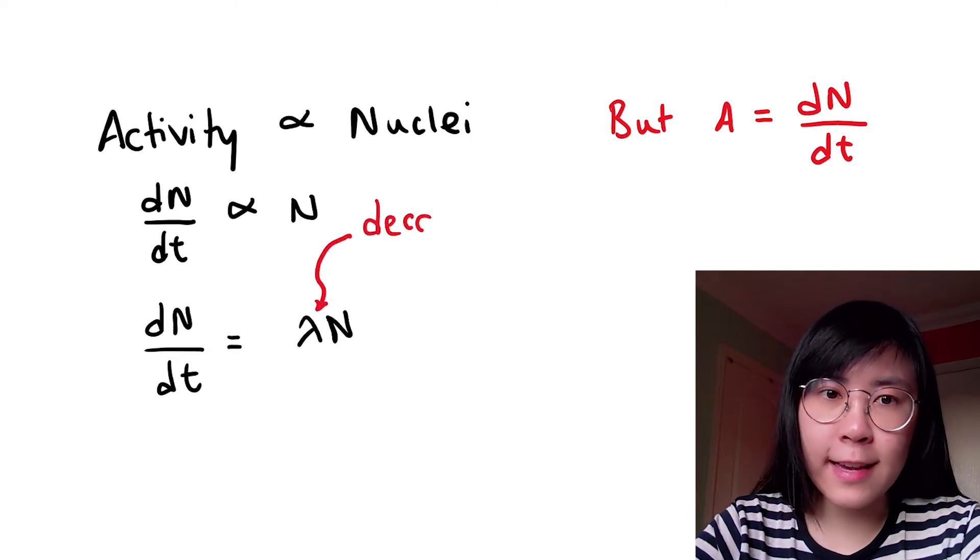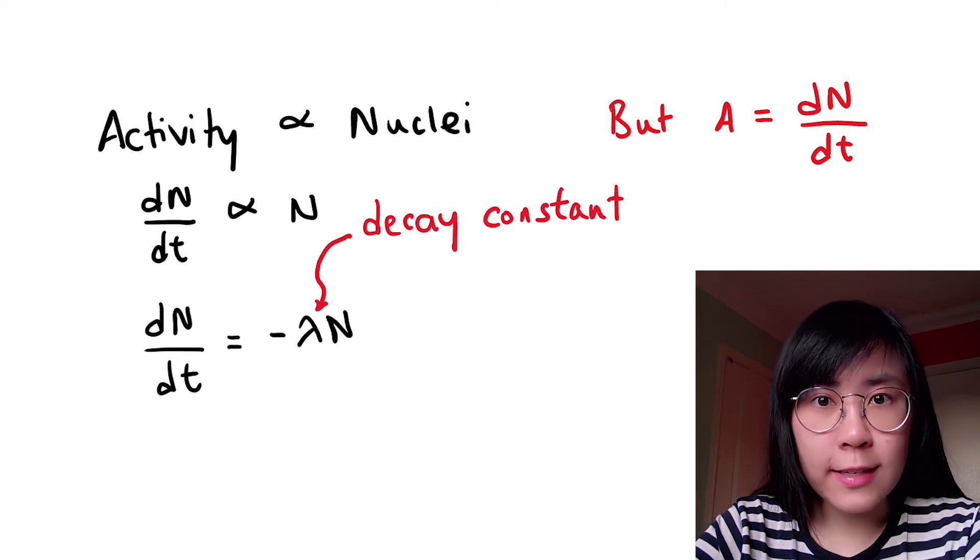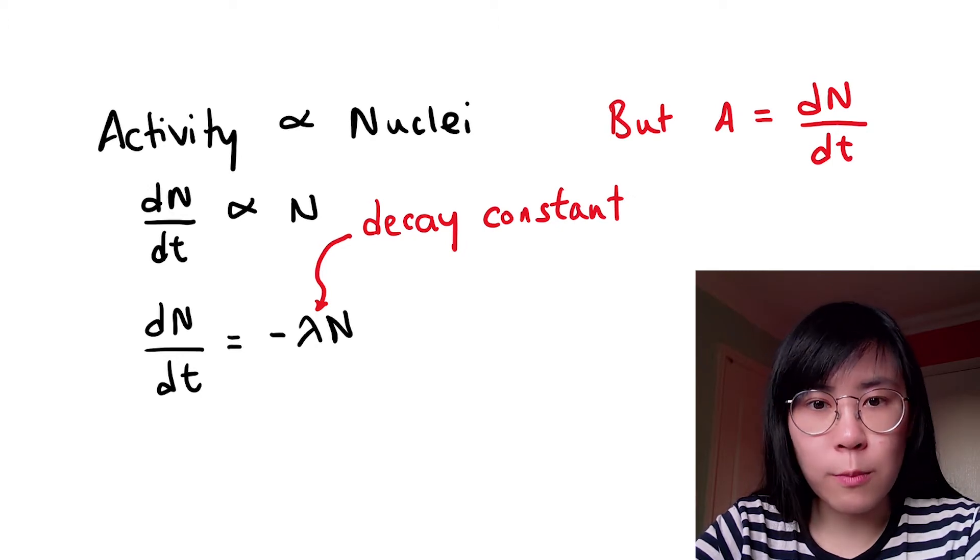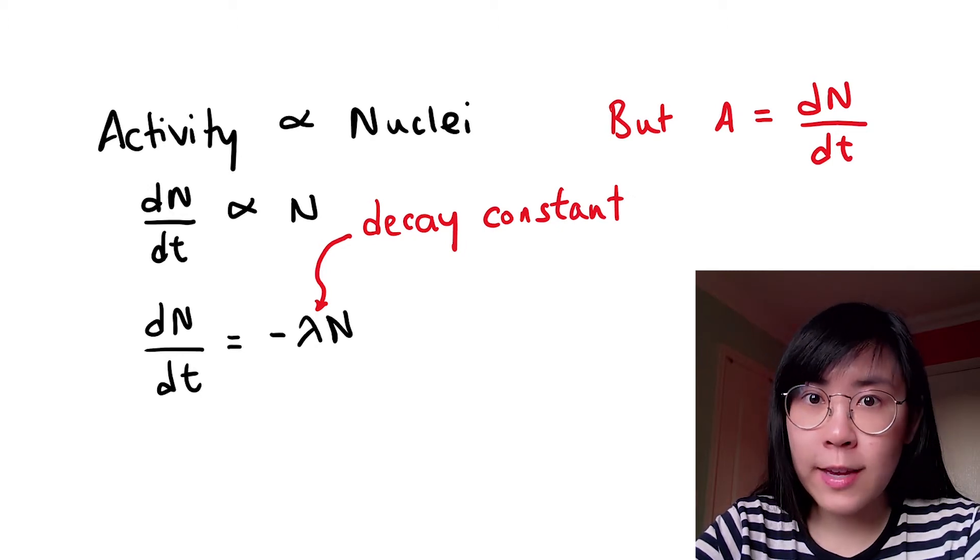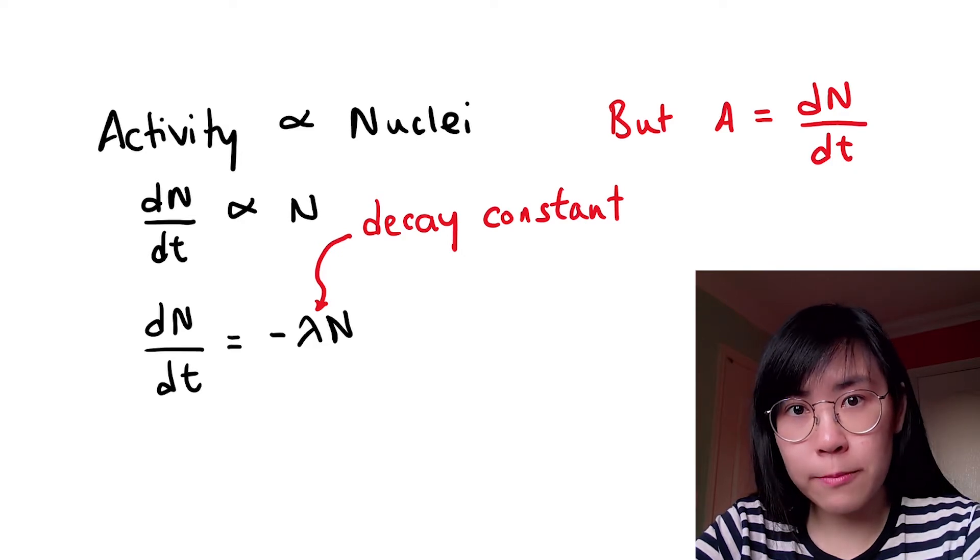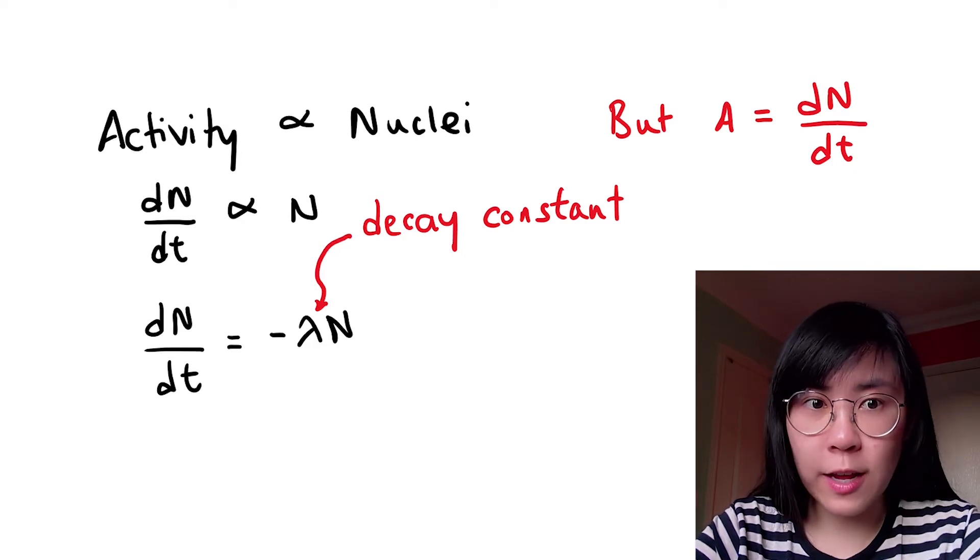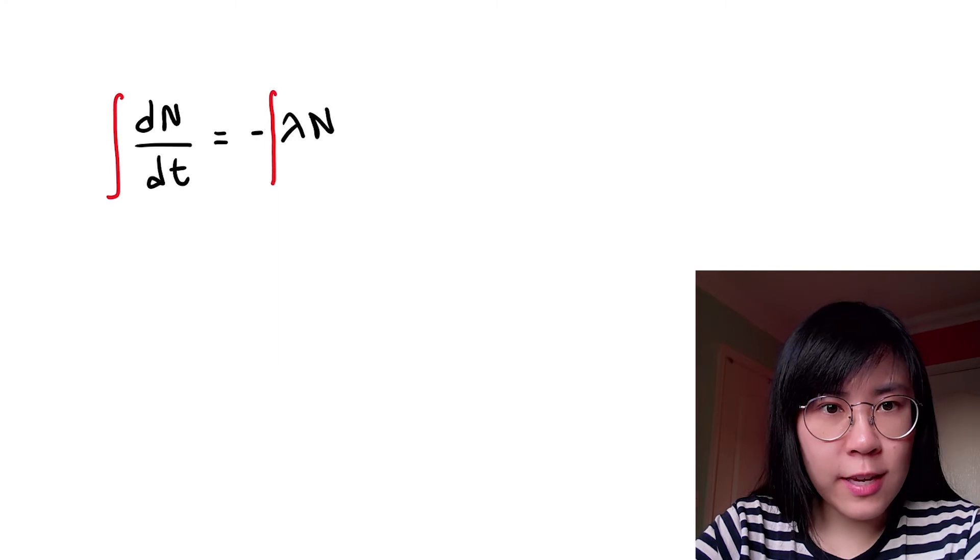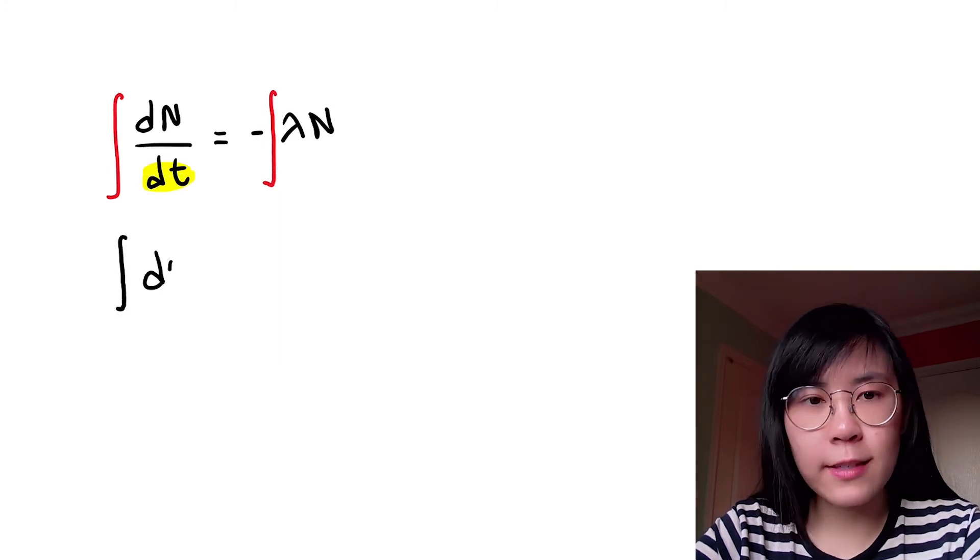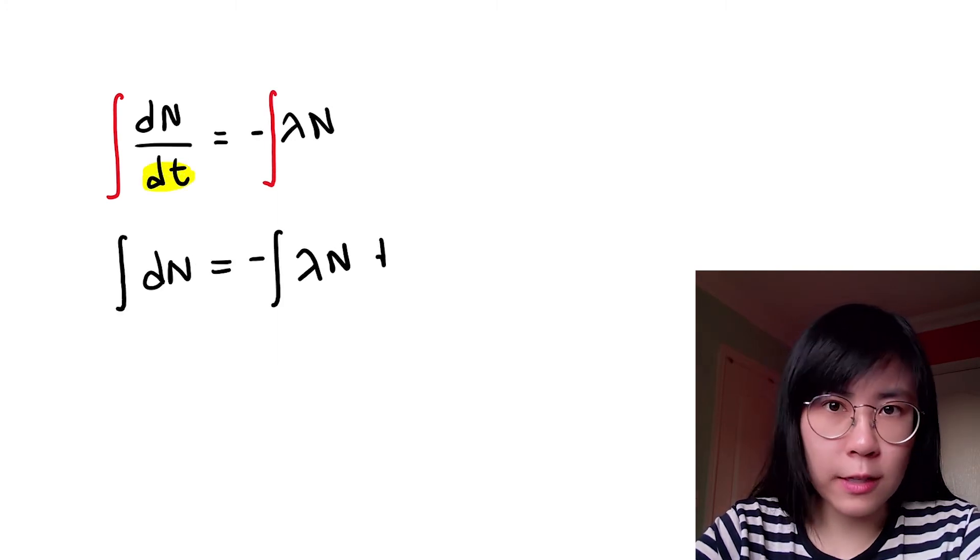Let this be the decay constant which needs a negative sign in front of it to show that the number of nuclei in the sample is actually reducing over time. We will now integrate both sides of this equation and now take dt or Δt to the right hand side to separate it from ΔN.